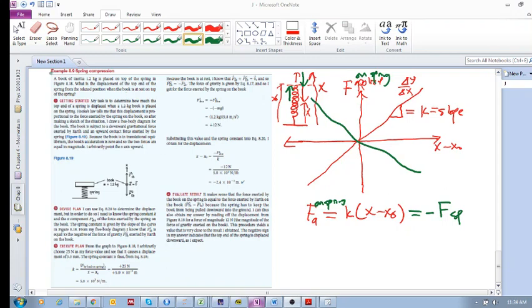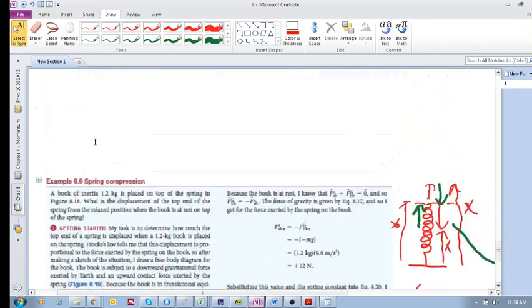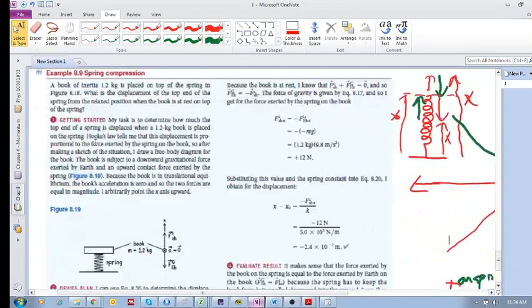Alright, so let's look at example 8.9. This is now an application of Hooke's Law. A book of inertia 1.2 kilograms is on top of the spring in the figure.